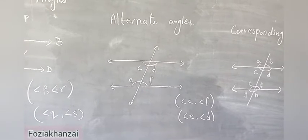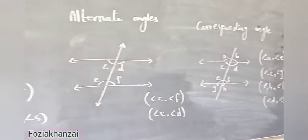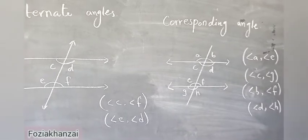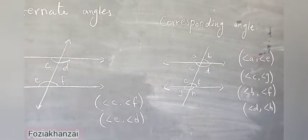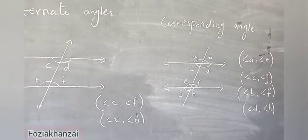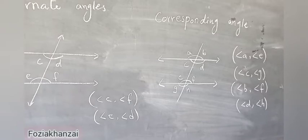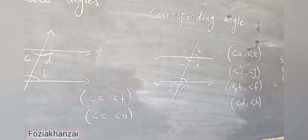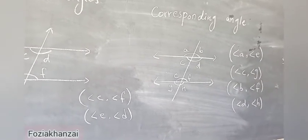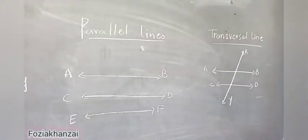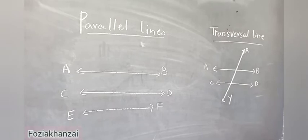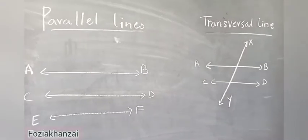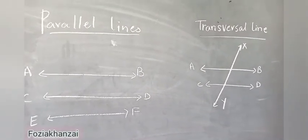C, F and D, E are examples of alternate angles. For corresponding angles: angle A and angle E, and angle C and angle G are both corresponding angles — they are on the same side of the transversal line, with one angle interior and the other exterior. Parallel lines have the same distance but do not intersect each other. For transversal line, first draw the parallel lines, then the third line intersects or cuts them. XY is a transversal line.